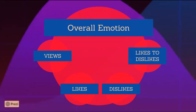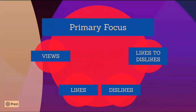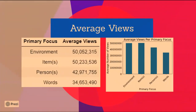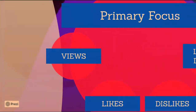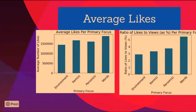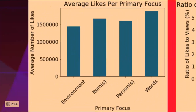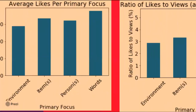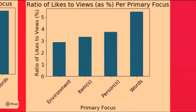Next I plotted video metrics for each thumbnail focus. Thumbnails with the environment as the primary focus have the highest average number of views, while thumbnails with words as a primary focus have the lowest average number of views. Interestingly, when I plotted average likes per primary focus, thumbnails with words have the highest average number of likes, and environment has the lowest — the inverse of what we saw for average views. When plotting the ratio of likes to views, words has the biggest ratio and environment has the lowest.